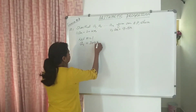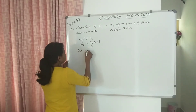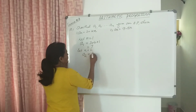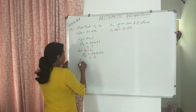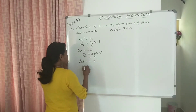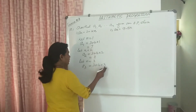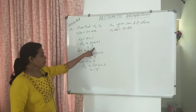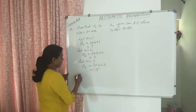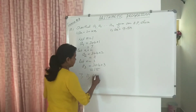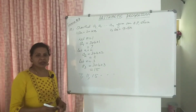Let N equal to 1: we get A1. That is 3 plus 4 into 1: 3 plus 4 is 7. Let N equal to 2: we get A2. That is 3 plus 4 into 2: 8 plus 3 is 11. Let N equal to 3: we get A3. It is 3 plus 4 into 3: 4 into 3 is 12, 12 plus 3 is 15. So the required AP is 7, 11, 15. The common difference is 4. So this is the AP.